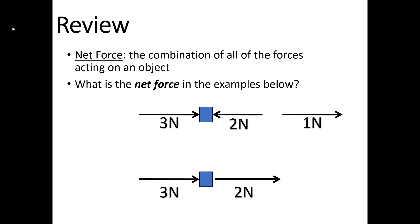The net force in this first example is 1 Newton. We have opposing forces pushing on the blue box. Since 3 Newtons is greater than 2 Newtons, the object is going to move to the right. 3 Newtons minus 2 Newtons gives us a net force of 1 Newton. In the second example, these forces are actually working together, so you add them: 3 Newtons plus 2 Newtons gives a net force of 5 Newtons, and the box moves to the right.